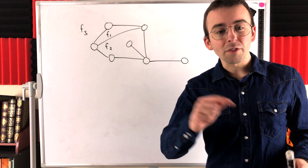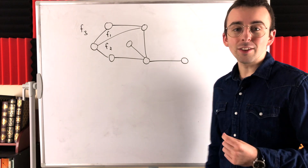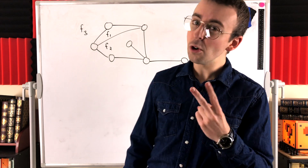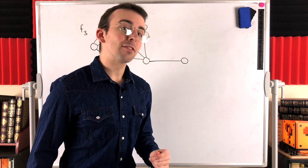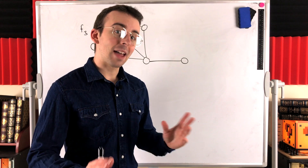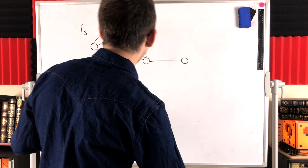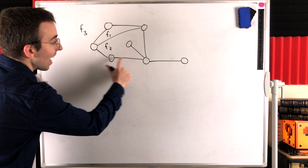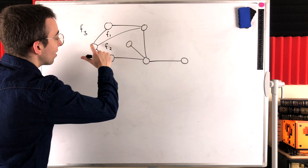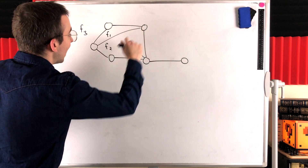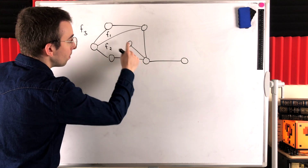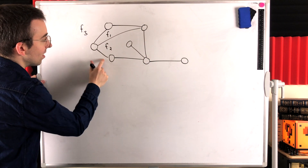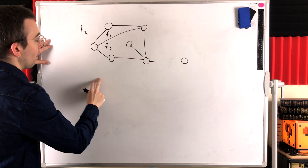So let's hit on the first important note. An edge is going to be in the boundaries of two regions if it lies on a cycle — that's the key difference here. We look at this edge, for example: it lies on this cycle, and it's in the boundary of F2 and it's in the boundary of F3.